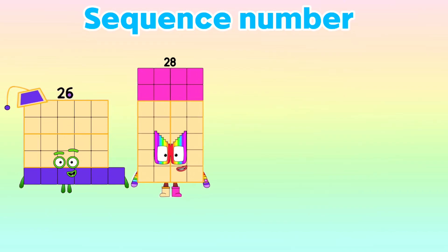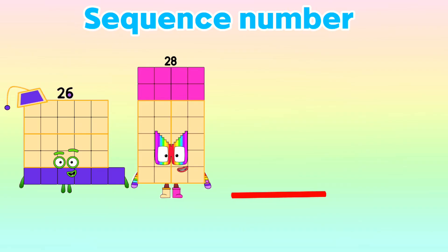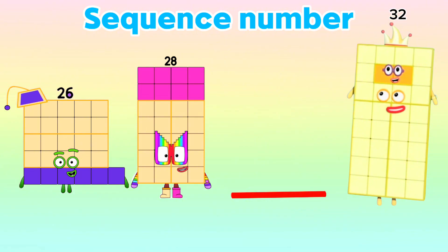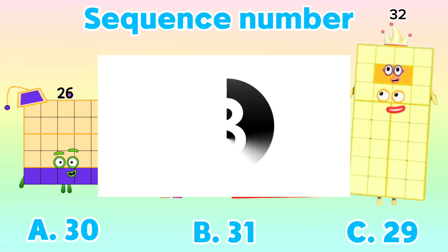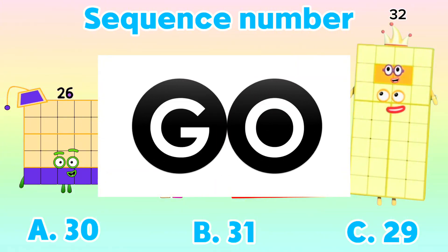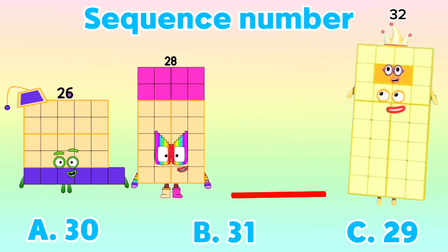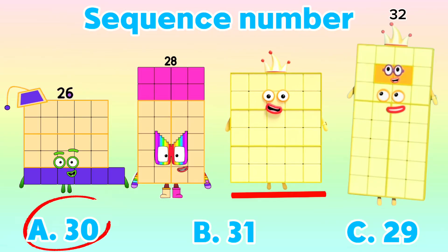26, 28, blank, 32. What is the correct answer? Is it letter A: 30? B: 31? Or C: 29? And the right answer is letter A: 30.